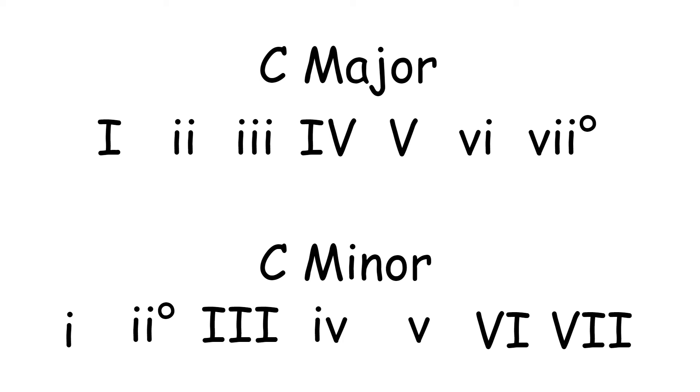Another thing you can note is that the four and the five are always the same form as the first. So if the first is major, the four and five will also be major. If you're in a minor scale and the first is minor, the four and five are also minor.